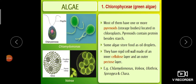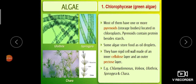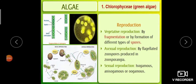This is the structure of Chlamydomonas as we draw it and as seen under the microscope. This is the structure of Ulothrix, this is the structure of Spirogyra, and this is Chara.